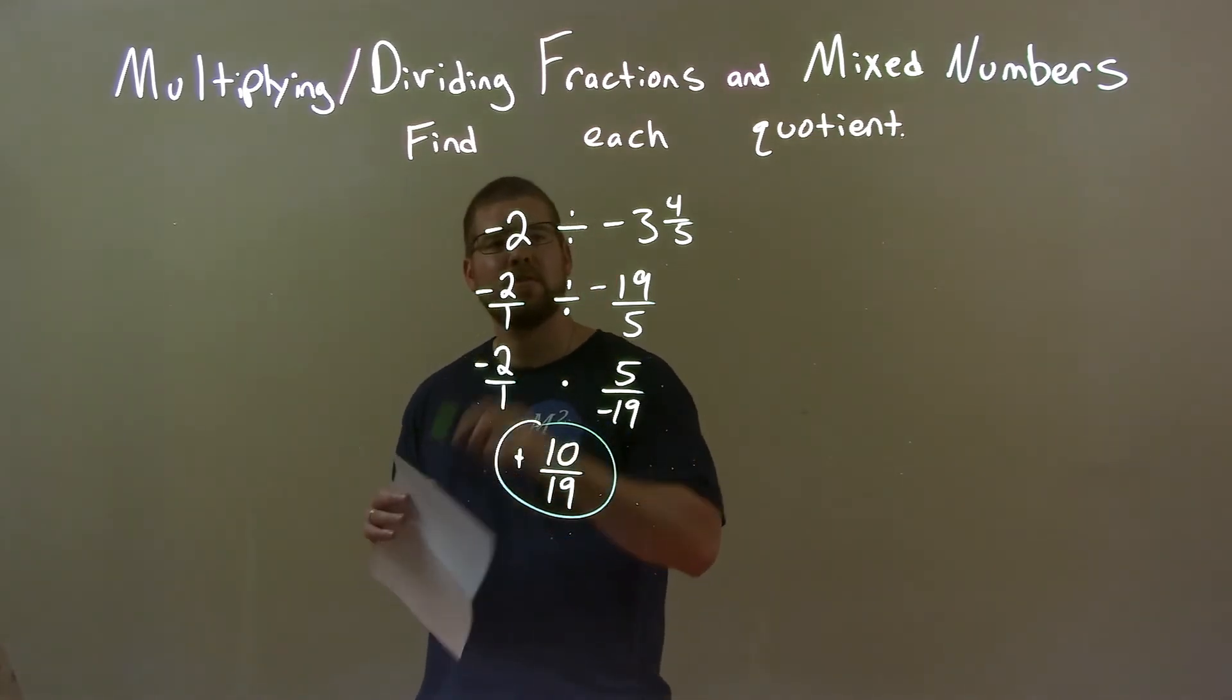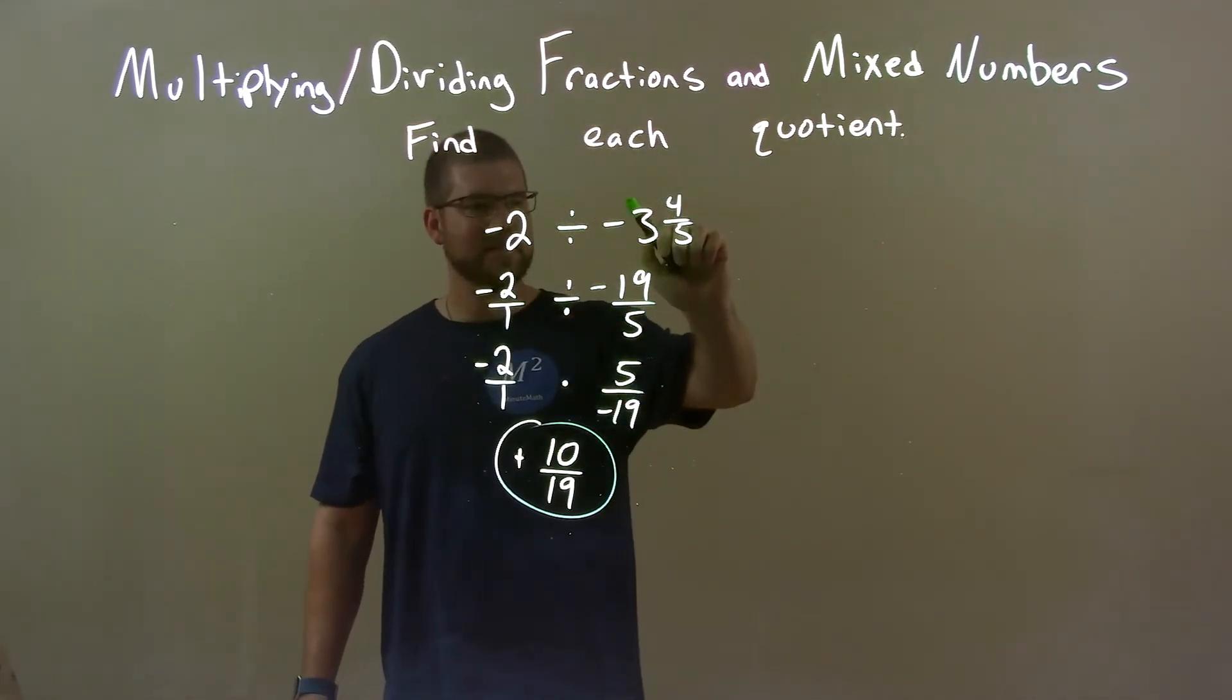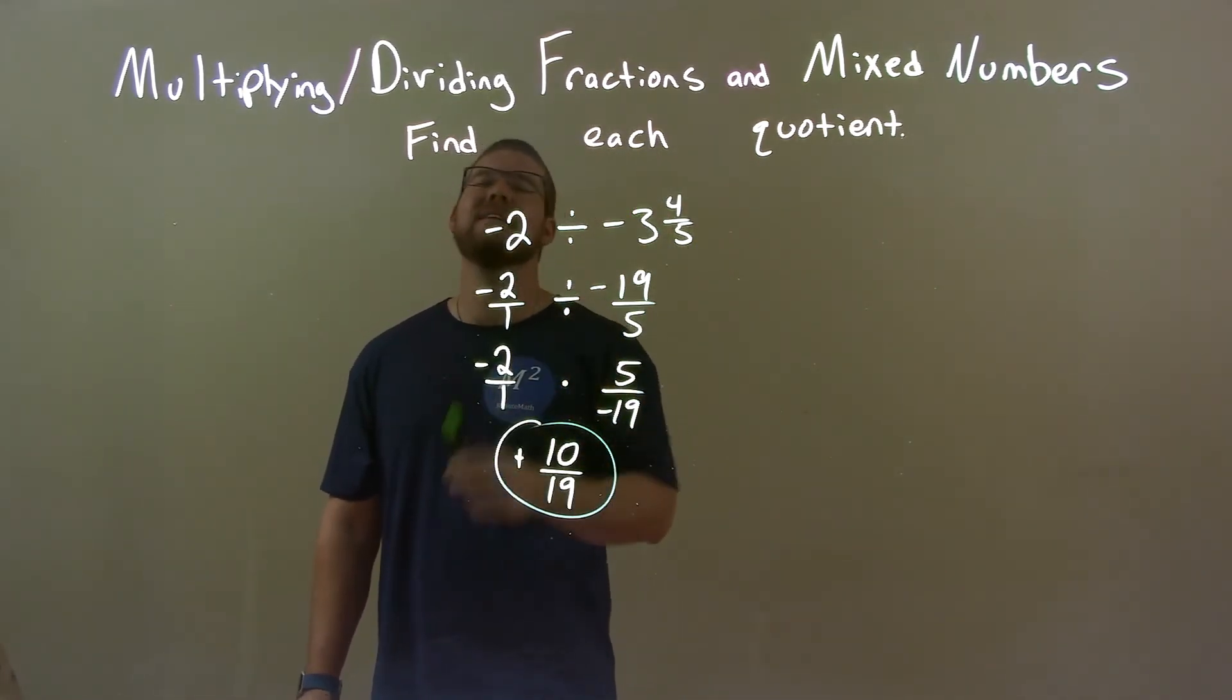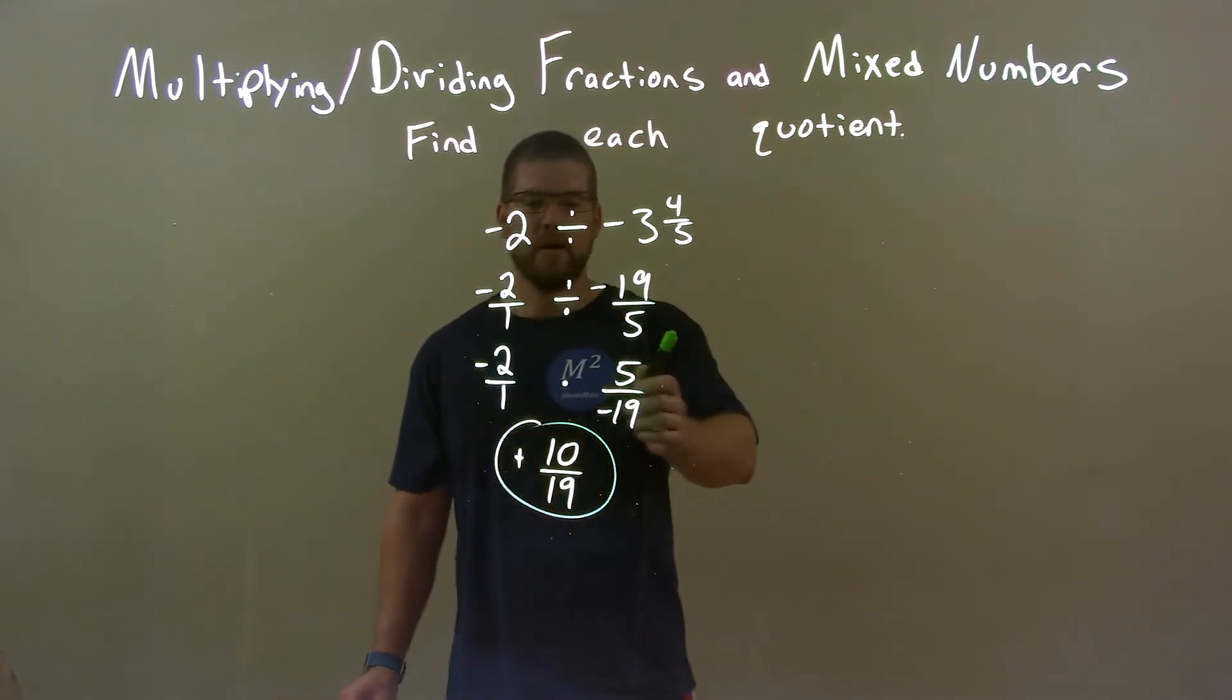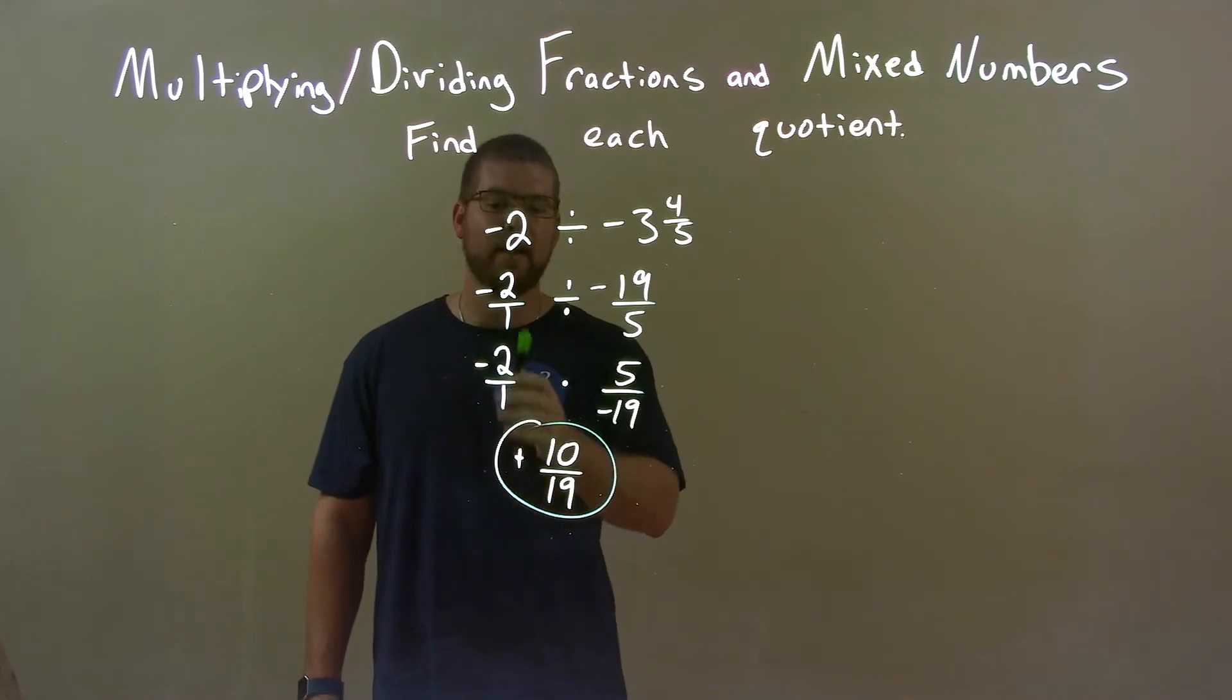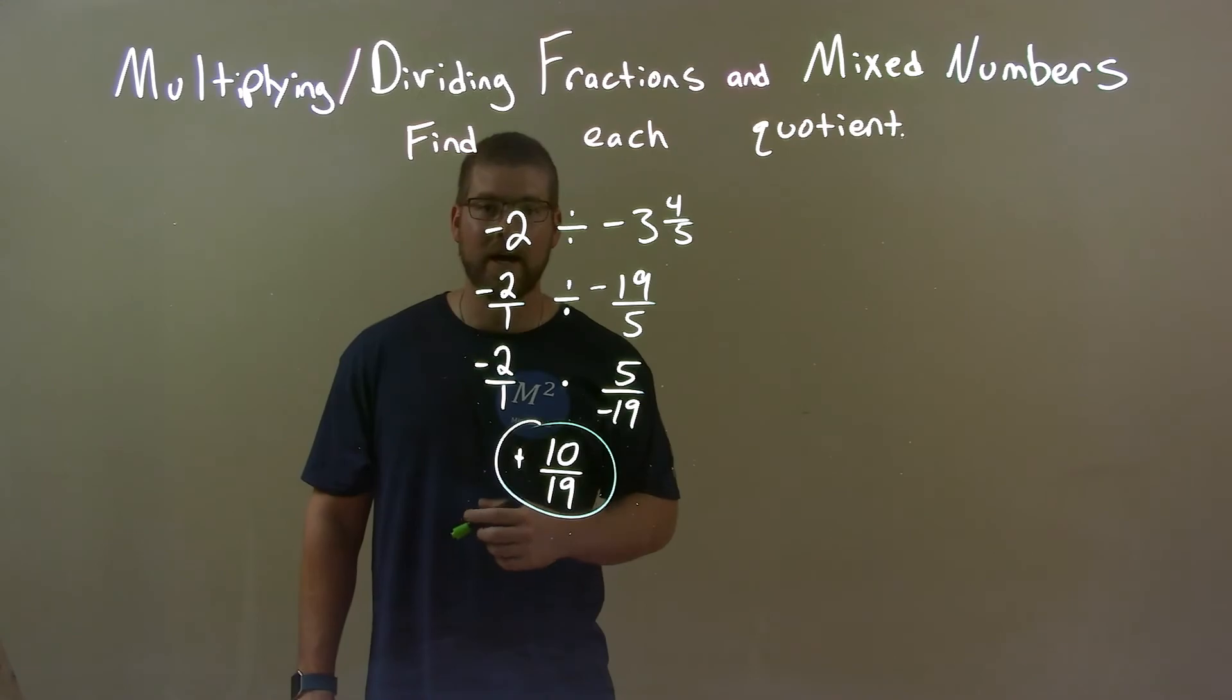Quick recap. We're given negative 2 divided by negative 3 and 4 fifths. I've converted this into an improper fraction. And instead of dividing, I multiply by flipping that. Multiply across the numerator, multiply across the denominator, and the negative times a negative is a positive. So again, final answer, positive 10 over 19.